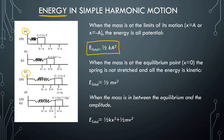When the mass is at the equilibrium point where x equals zero, like scenario B, the spring is not stretched and all the energy is kinetic. So it's moving the fastest here — all kinetic energy — so we have energy equal to one-half mv squared.